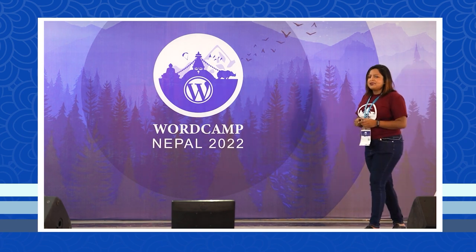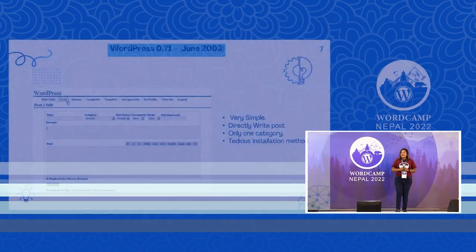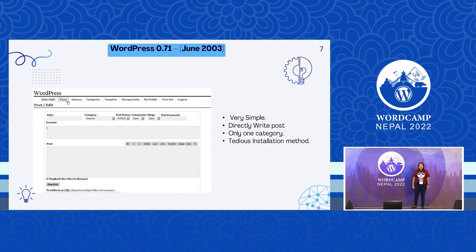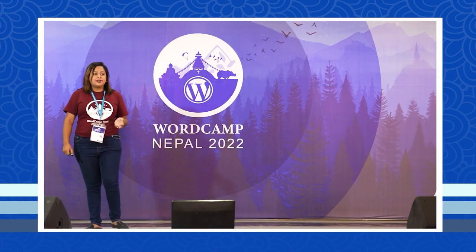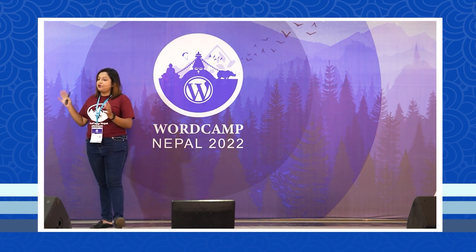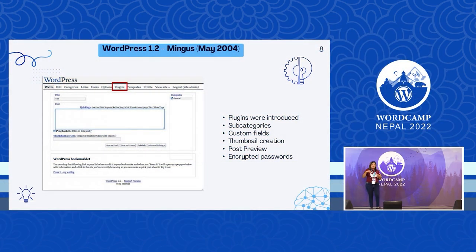To understand that, let me run through a history. How many of you started WordPress development back in 2003? Very few. Initially when WordPress was started, it was very simple — we used to directly write posts. There was nothing like what we see right now in WordPress. It was just click and go, but the installation method was very tedious. With the release of WordPress 1.2, there was a major introduction of plugins, which made life much easier. Subcategories were also introduced along with many other elements to enhance the customer experience.